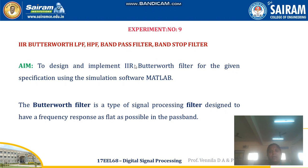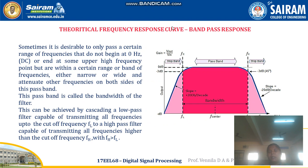To design and implement IIR Butterworth Filter for a given specification using simulation software MATLAB. Butterworth Filter is a type of signal processing filter designed to have a frequency response as flat as possible in the pass band. This is the theoretical frequency response curve: from 0 to FL is the stop band, from FL to FH is the pass band where only useful information is transferred, and from FH onward is the stop band where the signal is not allowed to pass.